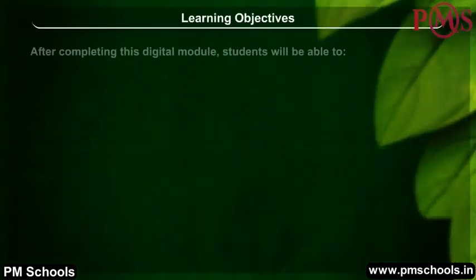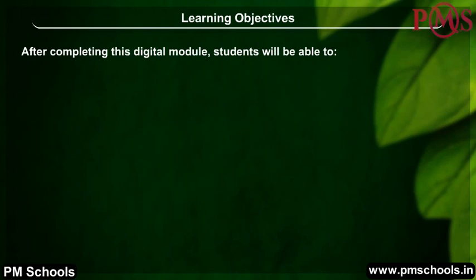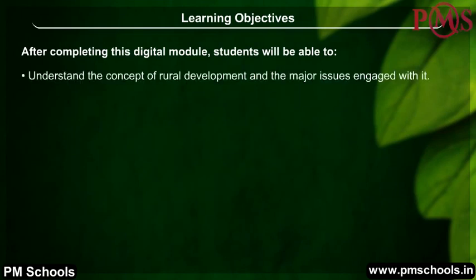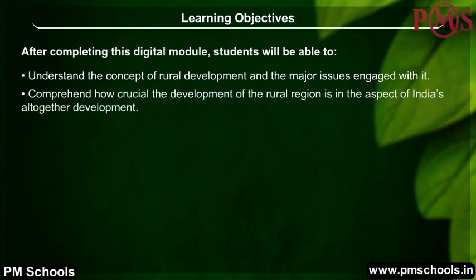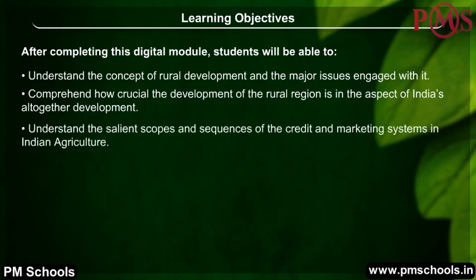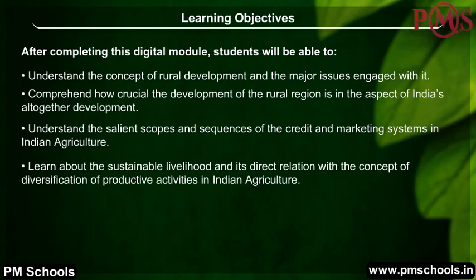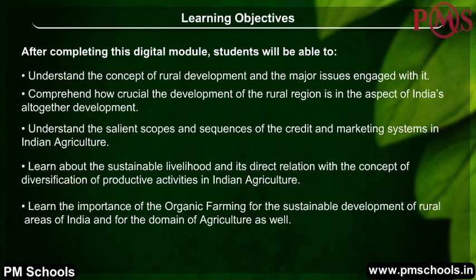Learning Objectives: After completing this digital module, students will be able to understand the concept of rural development and the major issues engaged with it; comprehend how crucial the development of the rural region is for India's overall development; understand the salient scopes and sequences of the credit and marketing systems in Indian agriculture; learn about sustainable livelihood and its relation with diversification of productive activities; and learn the importance of organic farming for sustainable development of rural areas of India and for agriculture as well.